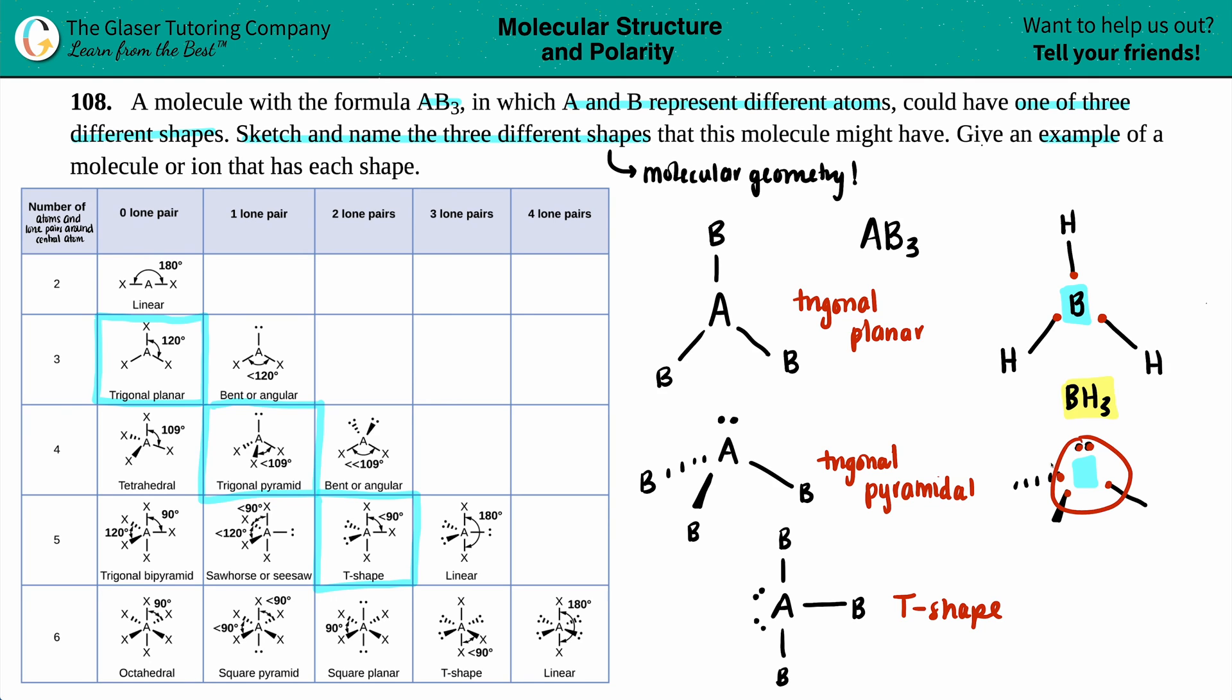We look in group five A or 15, and that's nitrogen. So nitrogen could be in the middle here. And now we just have to say the other atoms, but you are always safe with just hydrogens. So we could say that this is NH3.